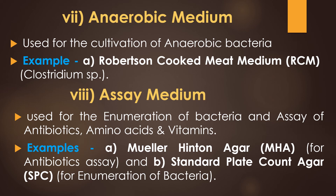The seventh type is anaerobic medium, used for the cultivation of anaerobic bacteria like Clostridium species. The example is Robertson's cooked meat medium (RCM). The eighth type is assay medium, used for the enumeration of bacteria and assay of antibiotics, amino acids, and vitamins. Examples include Muller-Hinton agar for antibiotic assay and standard plate count agar for enumeration of bacteria in food, milk, and water samples.